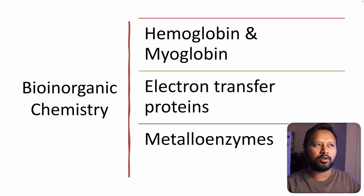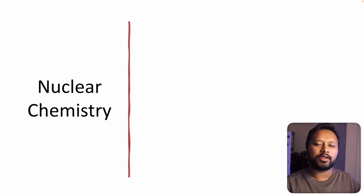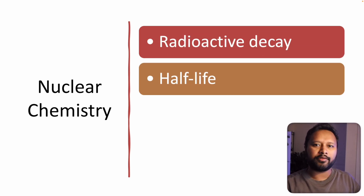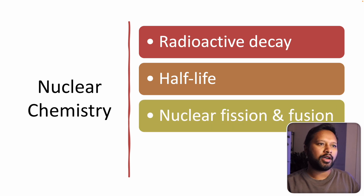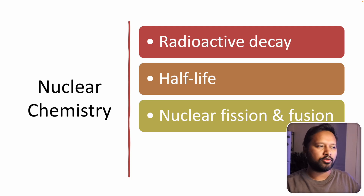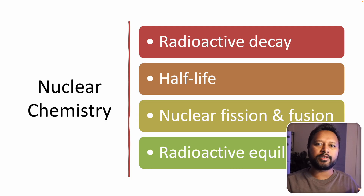Nuclear chemistry also has a portion in inorganic chemistry. Topics include radioactive decay, half-life calculations (similar to physical chemistry, so they can be studied together), nuclear fission and fusion reactions, electron capture and positron capture, how to identify expected products, and how to balance nuclear reactions. Radioactive equilibria and balancing nuclear reactions are all part of this section and should be covered.